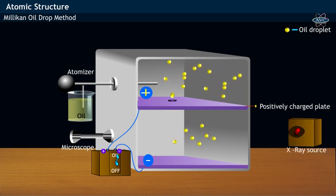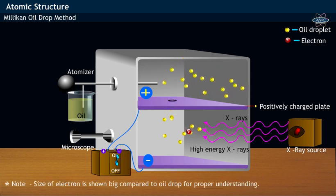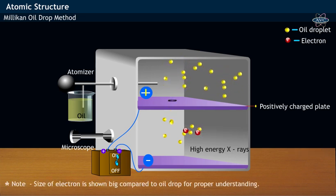Now, X-rays from an external source are made to pass through tiny oil droplets. These energetic X-rays falling on oil droplets removes electrons from the oil droplets and makes them ionized.